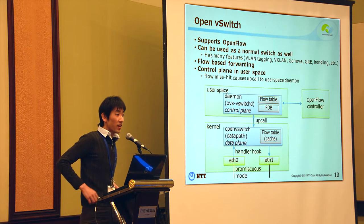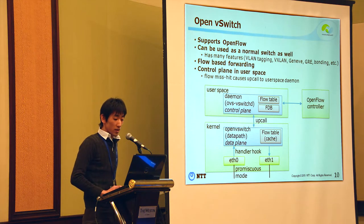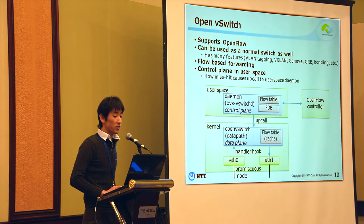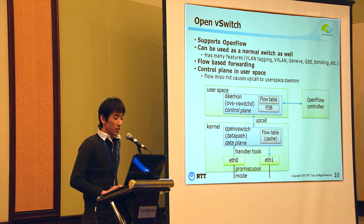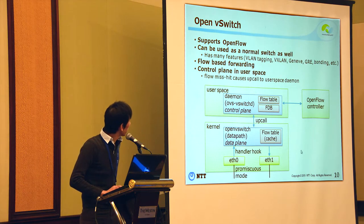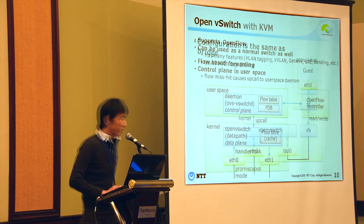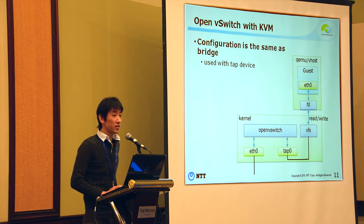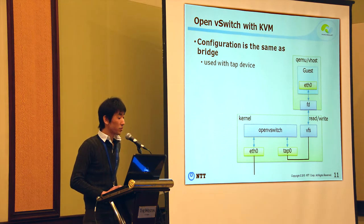The third switch is Open vSwitch. The most important feature of Open vSwitch is OpenFlow support. But it can also be used as a normal switch with many features: VLAN tagging, VXLAN, Geneve, GRE tunneling, bonding, and so on. Its forwarding is based on flows, so it uses a flow table in the kernel instead of an FDB. Note that there is another option in userspace such as DPDK, but I won't introduce that here.